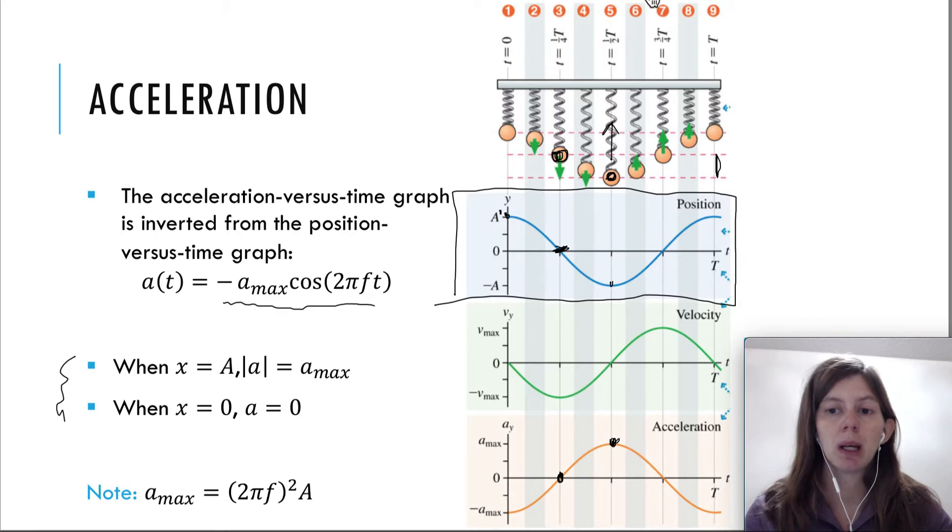So for example, if you pick point number seven here and ask you, okay, at that point, what is the velocity, you'd have to be able to say it has its maximum velocity. At point seven, what is the acceleration? It has zero acceleration, because it's at equilibrium. So you can get all that information just from looking at this graph.